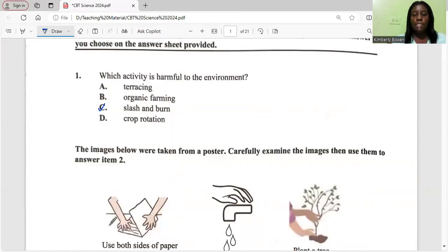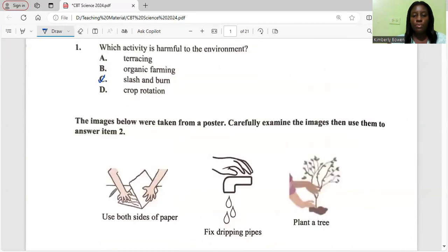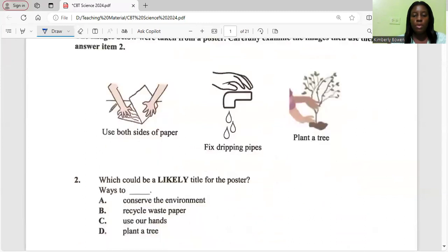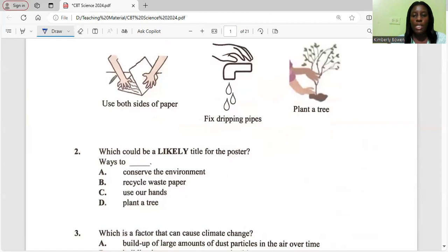The images below were taken from a poster. Carefully examine the images and use them to answer item 2. Which could likely be a title for the poster? Ways to conserve the environment. It says you should use both sides of the paper, fix dripping pipes, and plant a tree. So everything here summarizes to conserving the environment.